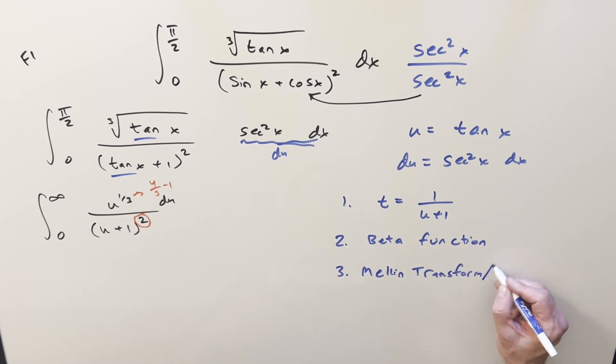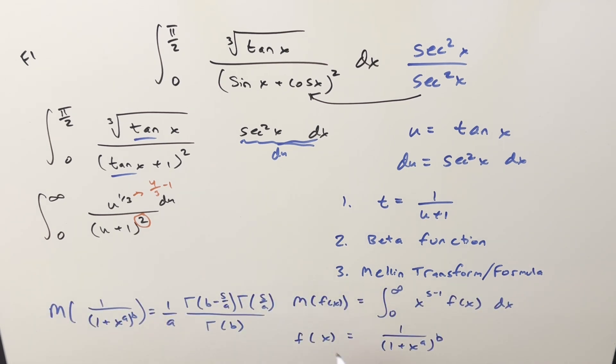So what we did in that other video, you could view it as a Mellin transform. But we're not really using any properties of this. We're just interested in this formula. So we have this here for our definition of the Mellin transform, that if we just have something, an integral going from zero to infinity, x to the s minus one, that's going to be this piece right here. And then the f of x part is going to be everything else. In our case, it's going to be something in this form here, one over one plus x to the a to the b.